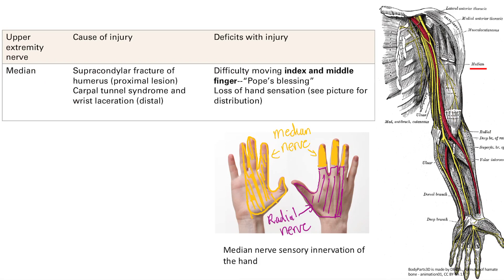Next is the median nerve, which runs straight down the middle of the arm. The way it can be damaged is by a fracture of the supracondyle — that's the proximal injury. Distally, the nerve fills the carpal tunnel, so that's where you can get carpal tunnel syndrome and median nerve compression.